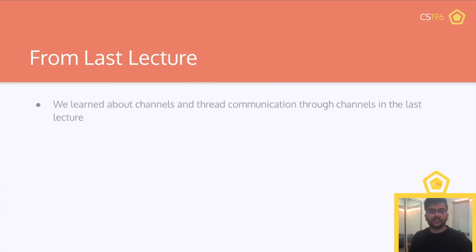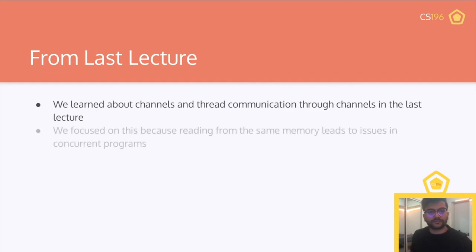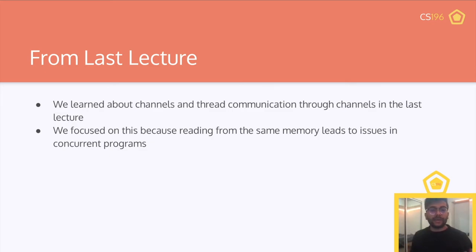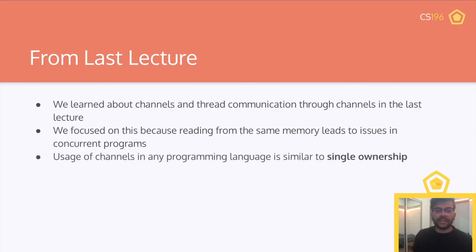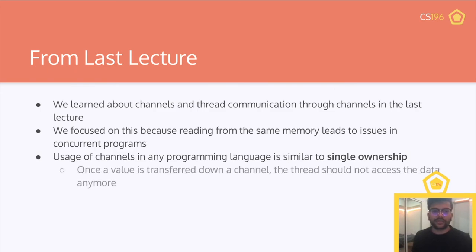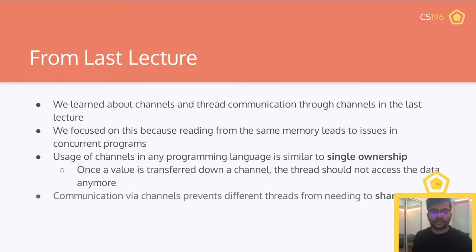From our last lecture, we learned about channels and thread communication through channels. We focused on this because reading from the same memory leads to issues in concurrent programs. We saw in the bank example, if we're reading the same memory and there's no sort of synchronization, we can have these weird numbers that don't add up to what we expect. Usage of channels in any programming language is similar to single ownership — once a value is transferred down a channel, the thread should not access that data anymore.